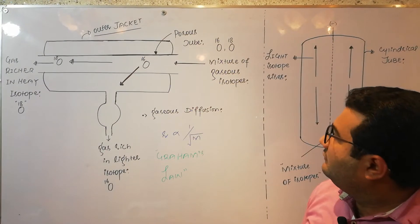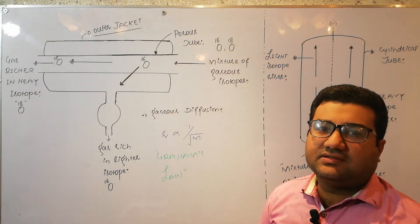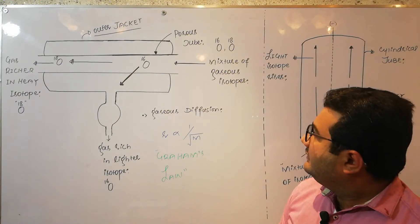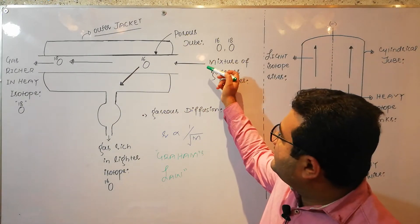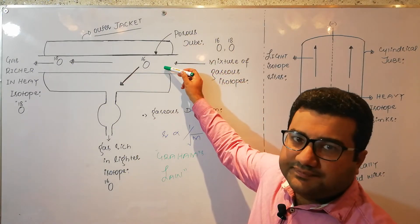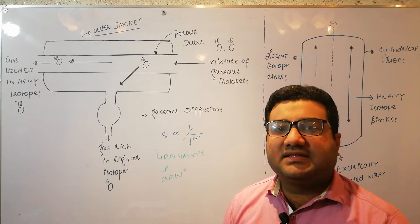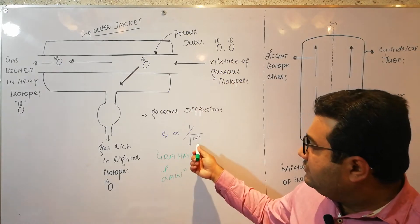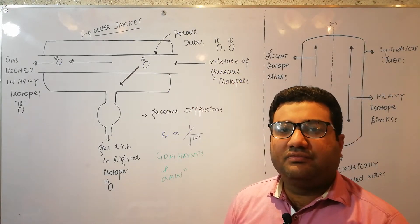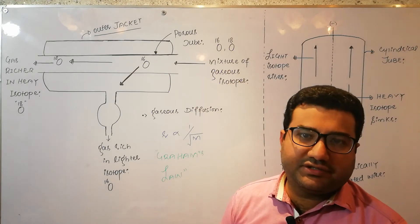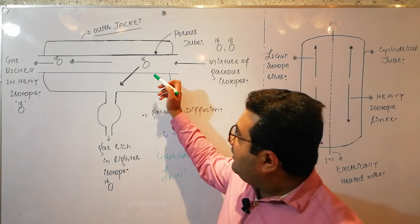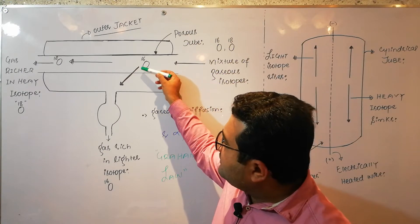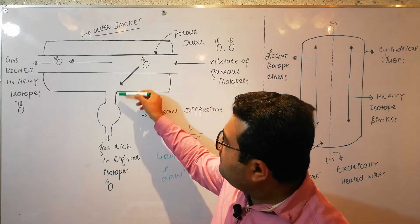Suppose that we have a mixture of oxygen-16 and oxygen-18, the two isotopes of oxygen. When we pass these two isotopes into the inner chamber, the isotope having mass 16 is lighter and that having mass 18 is heavier. According to Graham's Law, the rate of diffusion of the lighter isotope must be greater, so the lighter isotope will pass through the porous plates at a much faster rate.